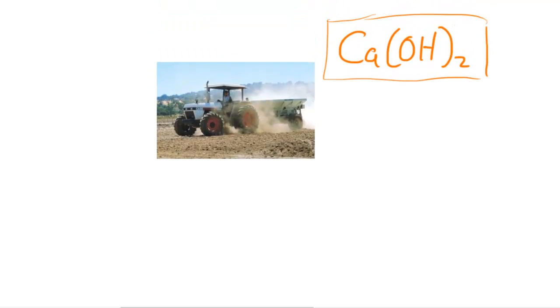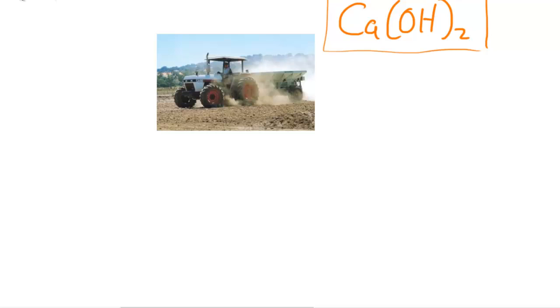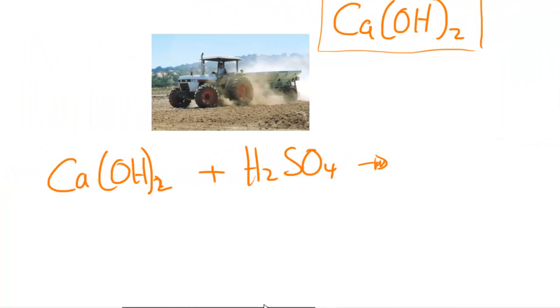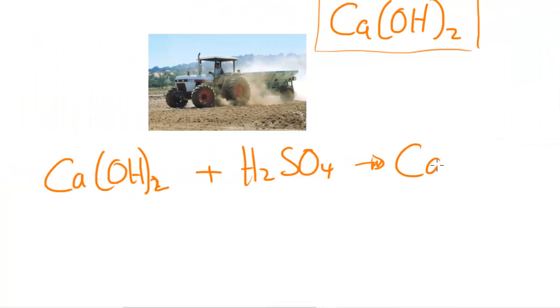So let's say there was some sulfuric acid in the soil, maybe from acid rain, and calcium hydroxide was to react with and neutralize the sulfuric acid. So we'd have the Ca(OH)2 and it would react with the sulfuric acid, H2SO4, and it would react to produce CaSO4, which is the salt produced, and it would produce 2H2O.